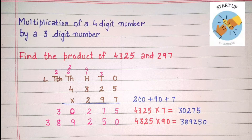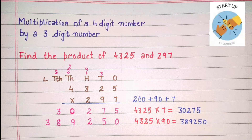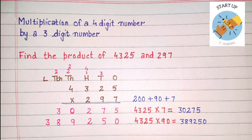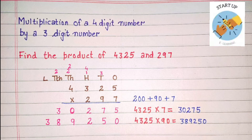Nine will be multiplied by 5: nine fives are 45. Five will be written under tens place and 4 carried to hundreds place. Nine twos are 18, plus 4 carried over, equals 22. Two will be written under hundreds place and 2 carried to thousands place. Nine threes are 27, plus 2 carried over, equals 29. Nine will be written under thousands place and 2 carried to ten-thousands. Nine fours are 36, plus 2 carried over, equals 38.